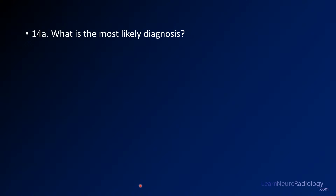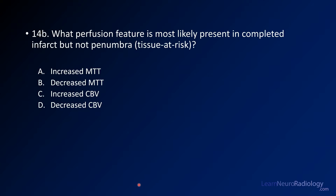Your first question is: what is the likely diagnosis? Your second question is: which perfusion feature is likely present in a completed infarct but not penumbra? The question is getting at which perfusion feature helps you differentiate completed infarct from penumbra — is it MTT or CBV, and when it's present, is it increased or decreased?